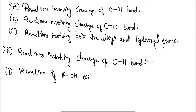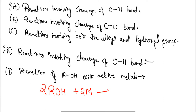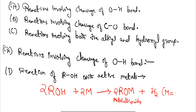The first reaction is the reaction of alcohol with active metals. The general equation shows alcohols reacting with active metals to form metal alkoxides with hydrogen gas being released. The active metals can be sodium, potassium, magnesium, aluminium, etc. These reactive metals replace the hydrogen to form the metal alkoxides.